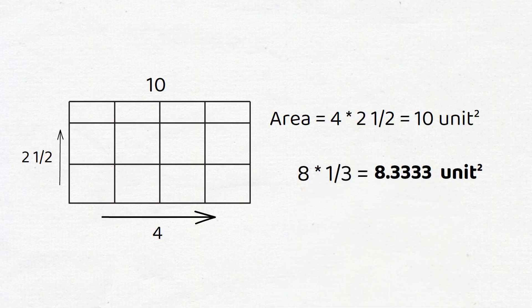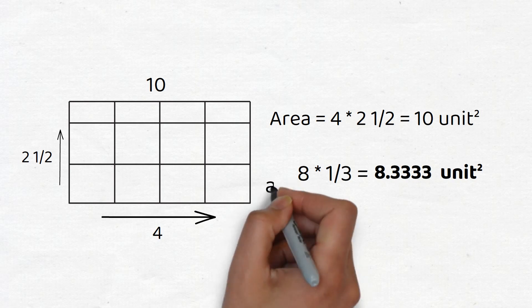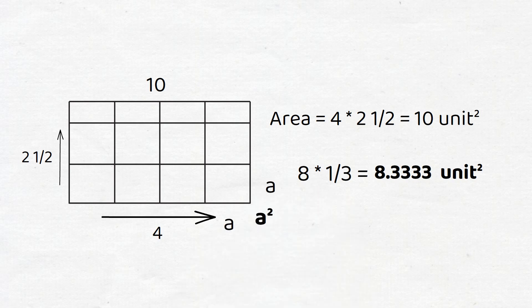The area of a square, whose side is a units, is a squared. Clearly, a square is a special type of rectangle, whose width is a and height is a as well.